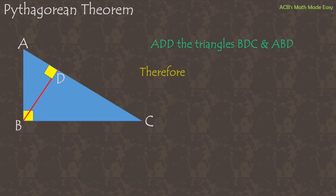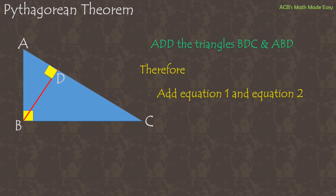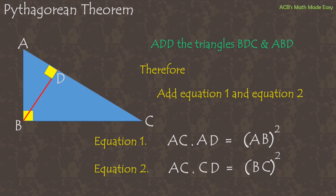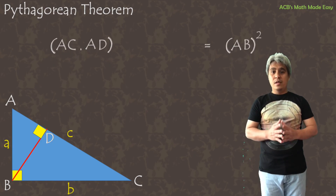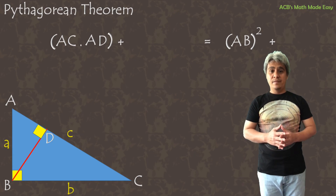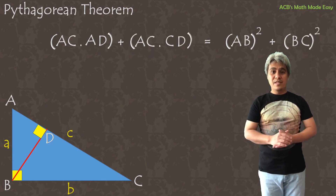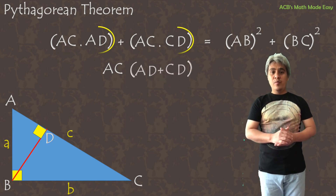The next step is to add the areas of triangles BDC and ABD, because the sum of them is triangle ABC. Therefore we add equation 1 and equation 2. Equation 1: AC times AD equals AB squared. Equation 2: AC times CD equals BC squared. Adding them, we factor out AC, so AD plus CD remains inside the parentheses.